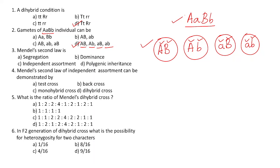Question 48: Mendel's second law is the law of independent assortment. The law of segregation and law of dominance are covered in the first law. The second law of Mendel explains independent assortment, which can be demonstrated by the dihybrid cross. The answer is option C, law of independent assortment.